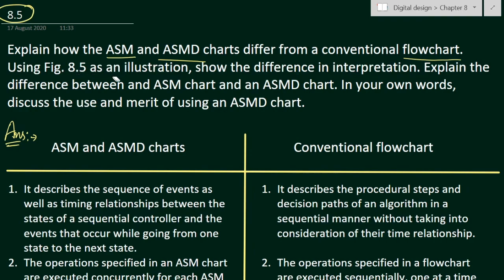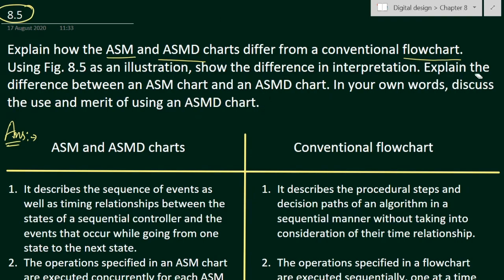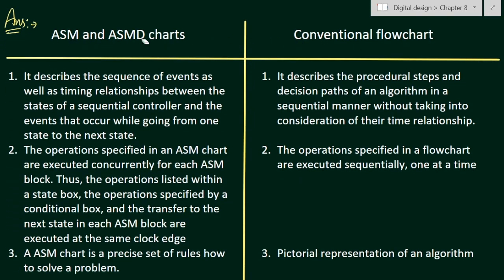We have to consider figure 8.5 as an illustration and show how they are interpreted. In the third part we have to explain the difference between an ASM chart and an ASMD chart. In the fourth part we have to discuss in our own words the use and merit of using an ASMD chart. In this table I have shown the ASM or ASMD chart on the left side and the conventional flowchart on the right side.